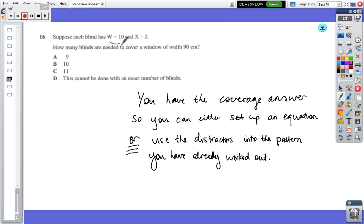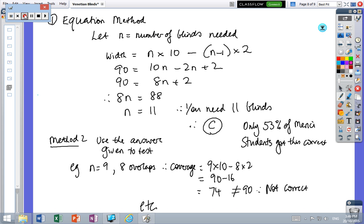Okay. So we've got new numbers again. The numbers keep changing. And in this particular case, we don't know how many blinds, but we know the overall width is 90 centimeters. So you've got the coverage, but you don't, we've got the coverage, but you don't have how many blinds. So there's two choices. You can definitely set up an equation. So if you're good with your mathematics, you can set up an equation or use the answers that are given to you and the pattern that you've worked out. And it should be straightforward. So again, you've only got a minute, minute and a half of these questions. Hopefully you'll get this one right. Have a go. And when you're ready, come back.